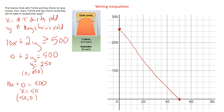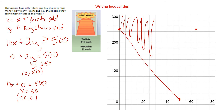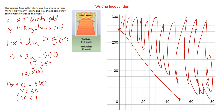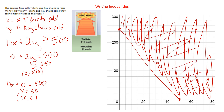Now we need to think about which way we're going to shade. Here's where 'greater than means shade above' doesn't always work. But we can plug in points: if they sell nothing, are they going to make the money they need? No. If they sell a ton of everything out here, are they going to make the money? Yes. So we shade out here. Notice you don't want to shade the negatives, because you're not going to sell negative t-shirts or keychains — keep it positive. Any value out here gets them the amount they need to meet or exceed their goal.